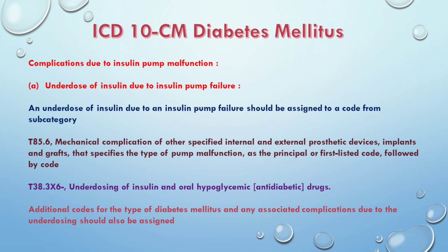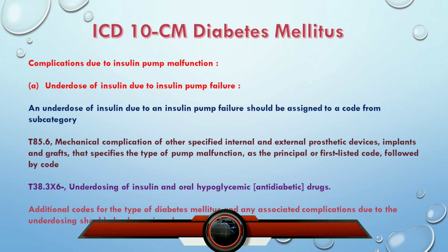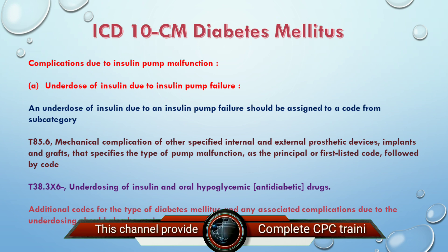If the patient has a diabetes-related condition and the insulin pump has failed, we have to report the T85.6 code as the primary diagnosis. T85.6 is a mechanical complication of other specified prosthetic devices. If there is a device or an insulin pump malfunction, it will be reported as the primary diagnosis. T38.3X6 is the underdosing of insulin or oral hypoglycemic drugs.